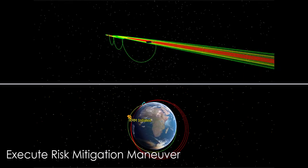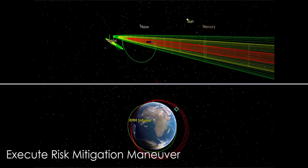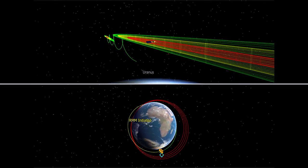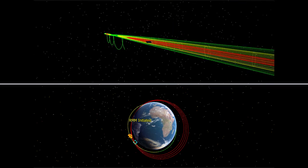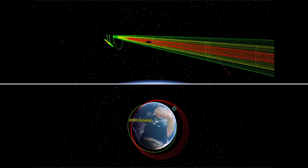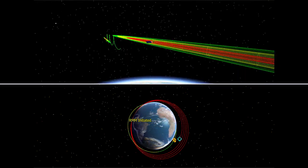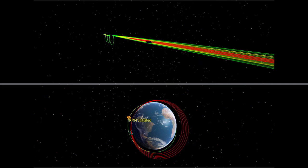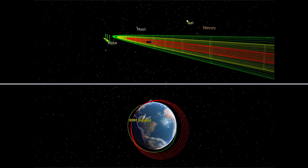FreeFlyer's capabilities also allow you to monitor proximity zones, calculate separations in multiple reference frames, and analyze critical data points, ensuring the safety and security of your assets.